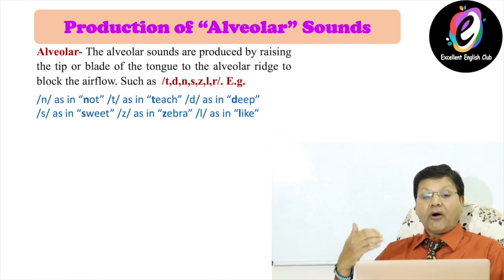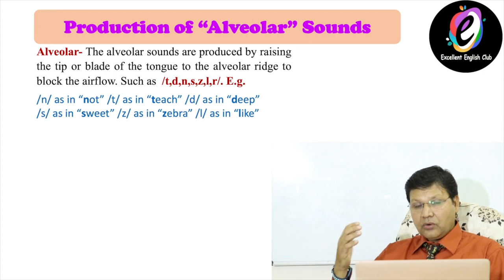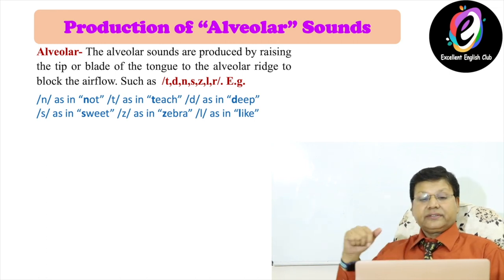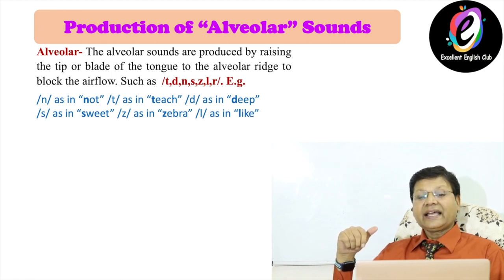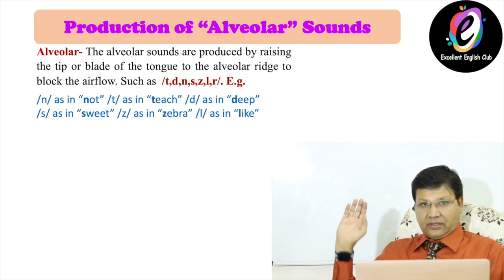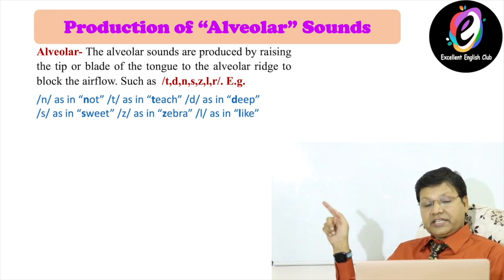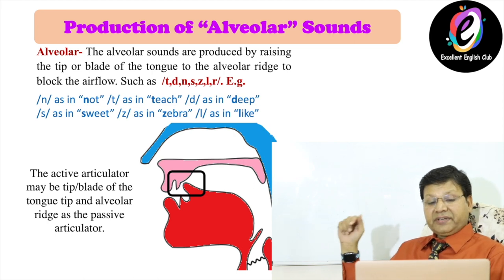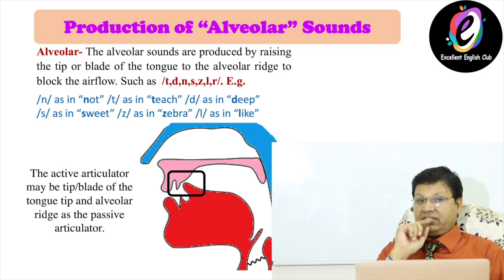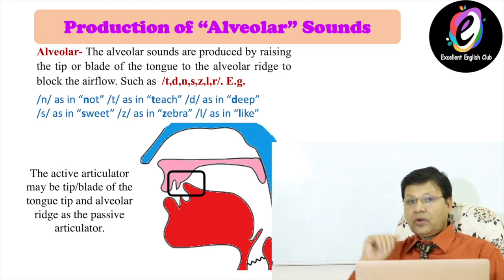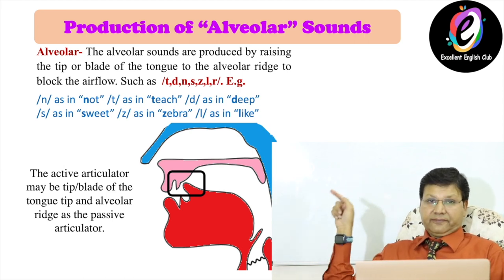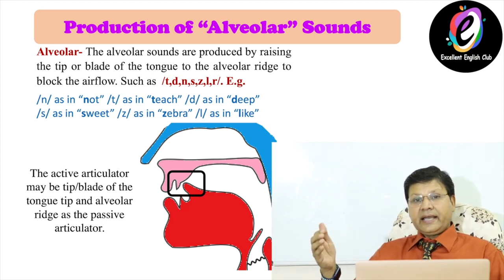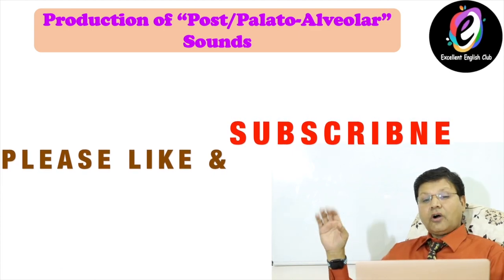Number four: production of alveolar sound. Alveolar sounds are produced by raising the tip or the blade of the tongue to the alveolar ridge to block the airflow. The tongue touches the alveolar ridge just after the teeth. Examples include /n/ as in 'knot', /t/ as in 'teach', /d/ as in 'deep', /s/ as in 'sweet', /z/ as in 'zebra', and /l/ as in 'like'. The active articulator is the tip or blade of the tongue and the passive articulator is the alveolar ridge.